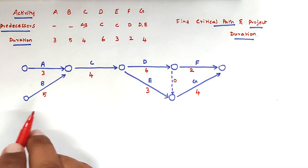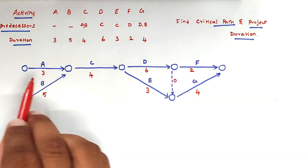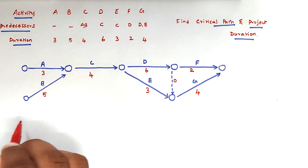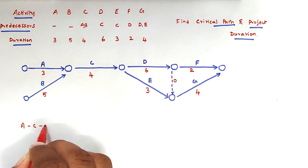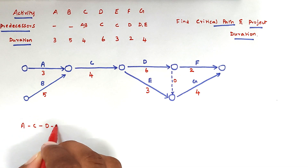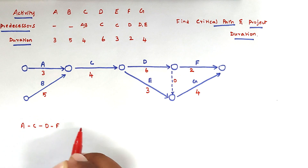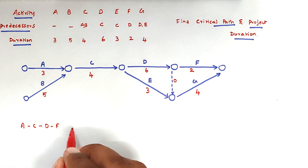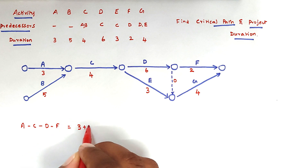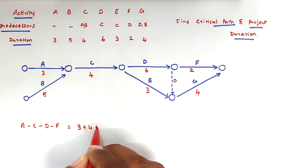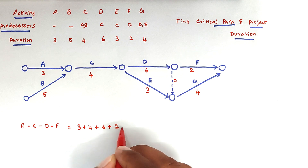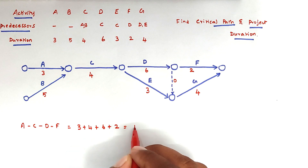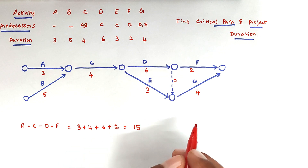Now we can write the different paths. The first path is A, C, D, F with a corresponding duration of 3 plus 4 plus 6 plus 2, which equals 15.